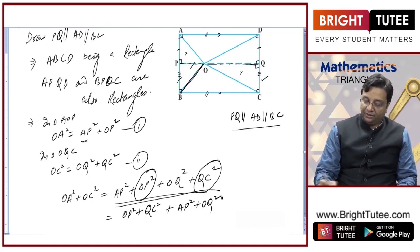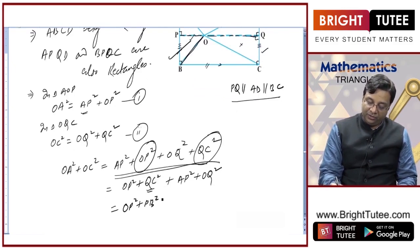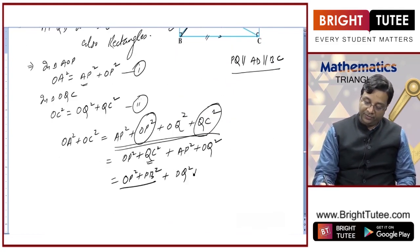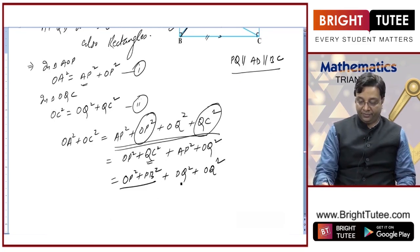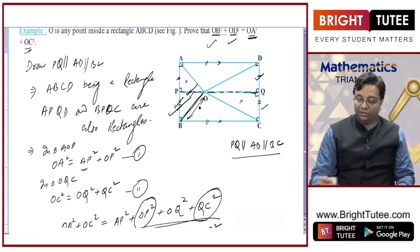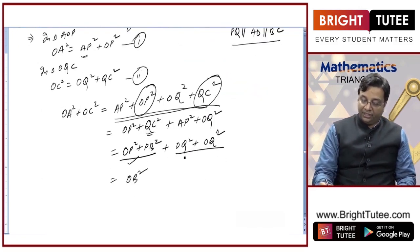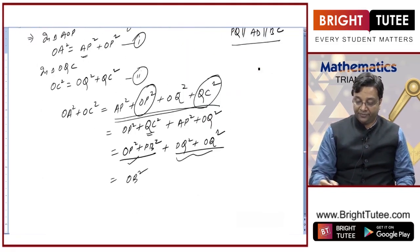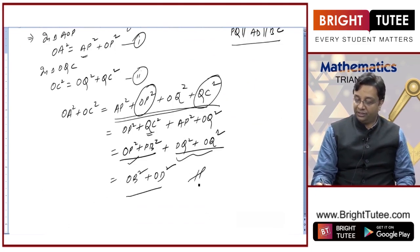Replacing QC with PB: OP² + PB² = OB² by Pythagoras theorem. Replacing AP with DQ: DQ² + OQ² = OD² by Pythagoras theorem. Therefore OA² + OC² = OB² + OD², which is what we had to prove.